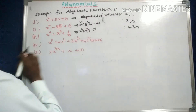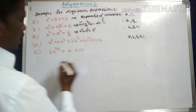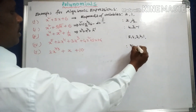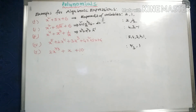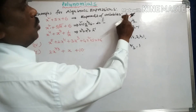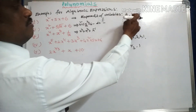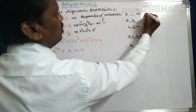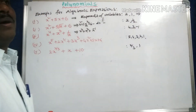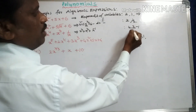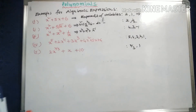In x to the power 5 plus 2x to the power 4 plus 3x cubed plus 4x squared plus 5x plus 6, the exponents are 5, 4, 3, 2, 1. In 2x to the power 2 by 3 plus x plus 10, the exponents of x are 2 by 3 and 1. Now, 2 and 1 are integers and positive integers, but 1 by 2 is a rational number. Exponents 4, 3 are positive integers; minus 1 is a negative integer.